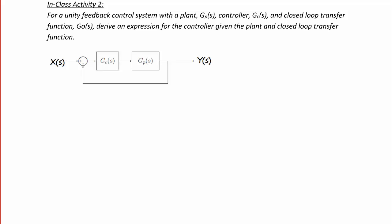Here I have drawn the unity feedback control system. Notice for unity feedback, the gain of the feedback is no longer H — it's simply 1, so you represent that as a wire, which would have a gain of 1.